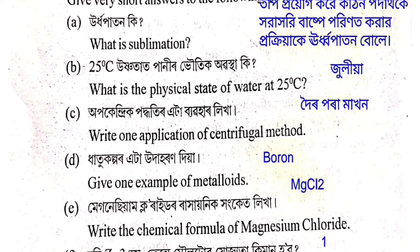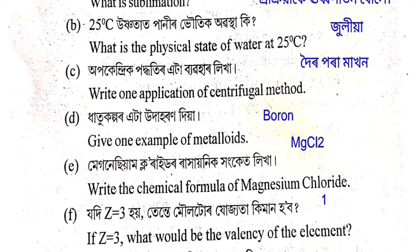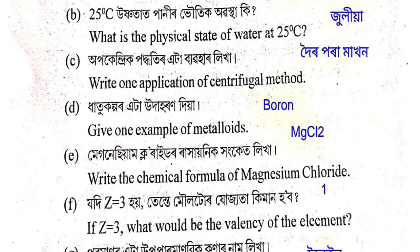Apochendrik podhati rata vibohar likhha — write the use of chromatography. The answer is for separation of mixtures (doi para maghan). Dhatu kolpor rata udhahran diya — give one example of a metalloid. The answer is boron. Magnesium chloride-or rakhionic honket likhha — write the chemical formula of magnesium chloride. The answer is MgCl₂.